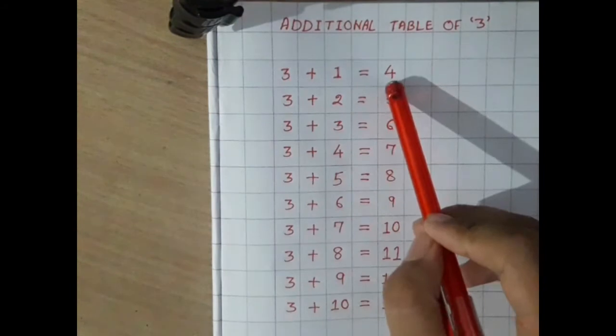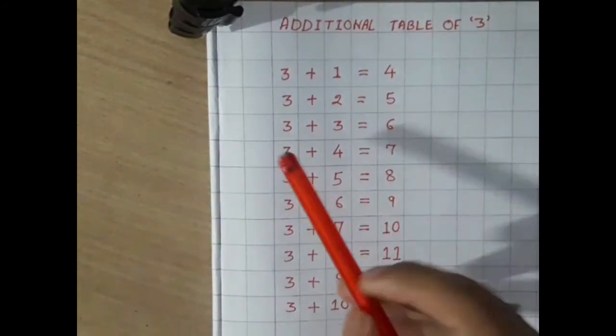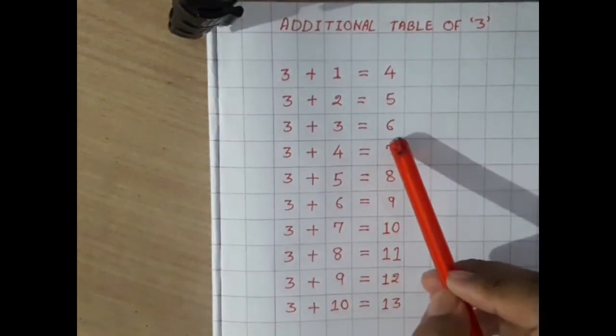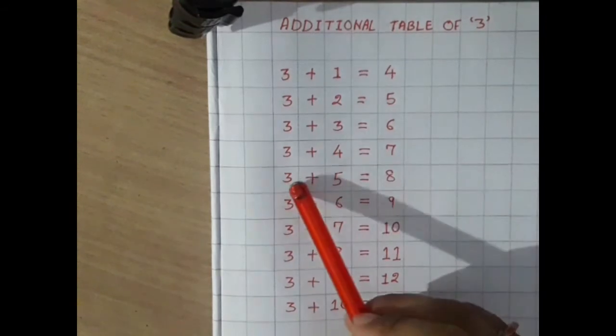3 plus 1 equals 4, 3 plus 2 equals 5, 3 plus 3 equals 6, 3 plus 4 equals 7.